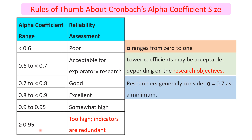But if it is greater than 0.95, it is too high, indicating that our instrument has redundant items, which we should avoid.